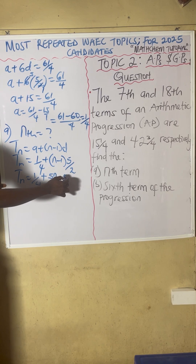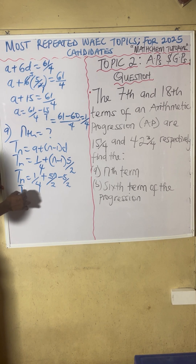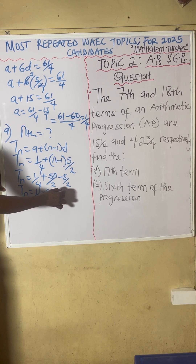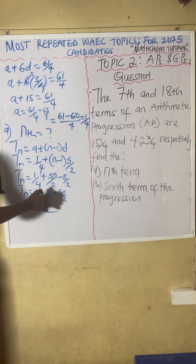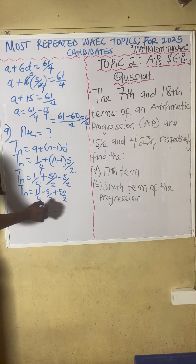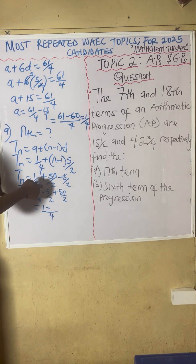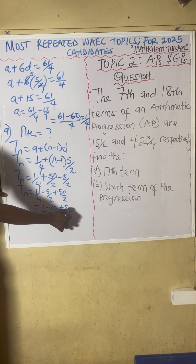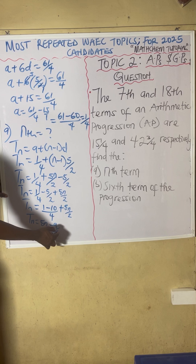Expanding the bracket: Tn equals 1 over 4 minus 5 over 2 plus 5N over 2. Solving fractions with LCM of 4: 4 into 4 is 1 times 1 equals 1; 4 into 2 is 2, times 5 equals 10; and 5N over 2. So our nth term is Tn equals 5N over 2 minus 9 over 4.